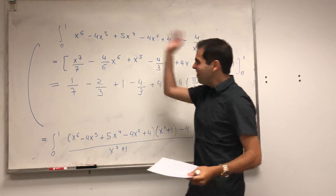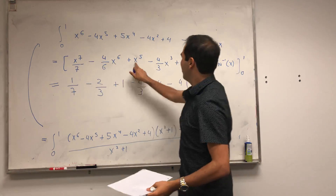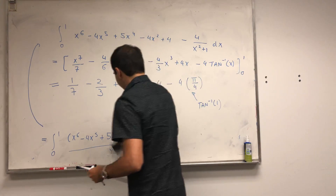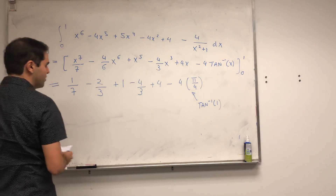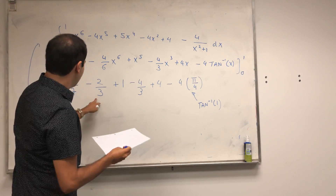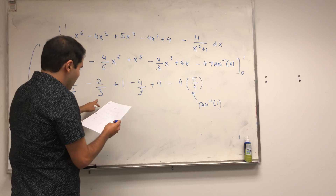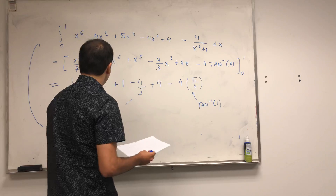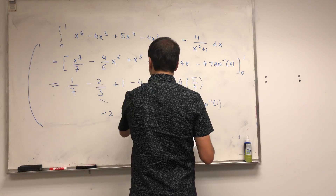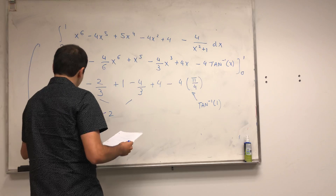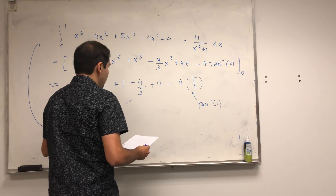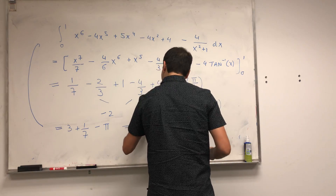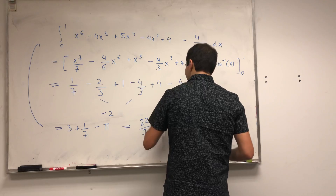All the other terms simplify: minus 2/3 minus 4/3 is minus 2, and minus 2 plus 1 is minus 1, plus 4 is 3, and 3 plus 1/7 gives us the final answer. This integral evaluates to 22/7 minus pi.